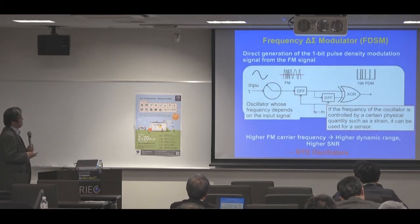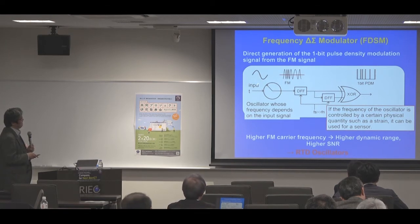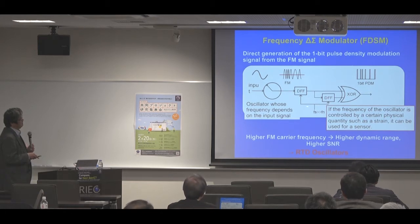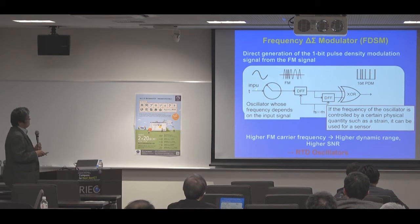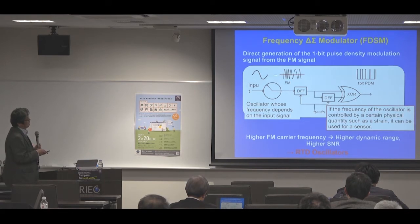A key part of this ADC is the delta-sigma modulator, and we employ a novel technique called the frequency delta-sigma modulator. This is a block diagram of the FDSM. It consists of an oscillator whose oscillation frequency depends on the input signal and a small digital circuit which works as an edge detector. The oscillator converts the input signal into a frequency modulation signal, and this edge detector converts the FM signal into a 1-bit pulse density modulated digital signal.